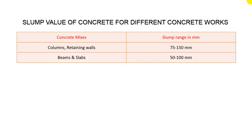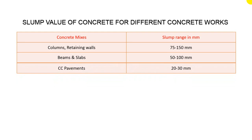For beams and slabs — they carry vertical load — the slump value should be 50 to 100 millimeters. Our slump value should be 50 to 100 millimeters for beams and slabs.